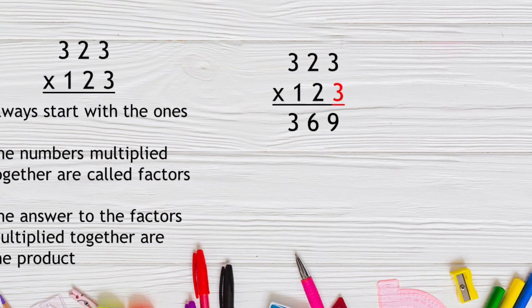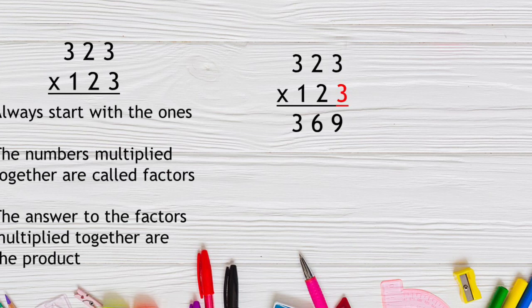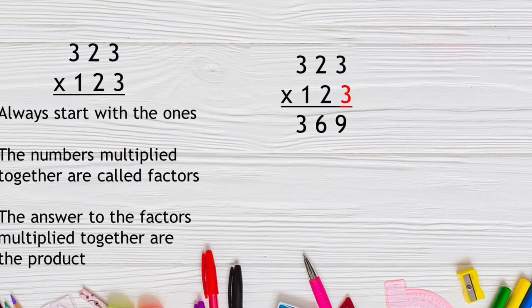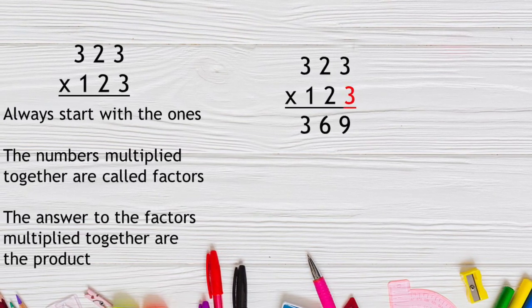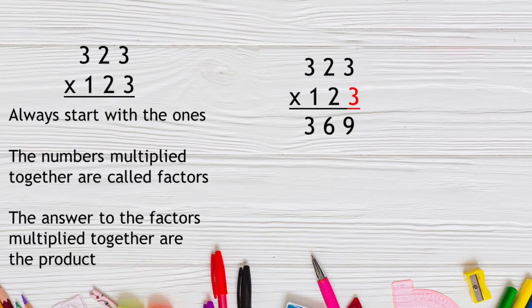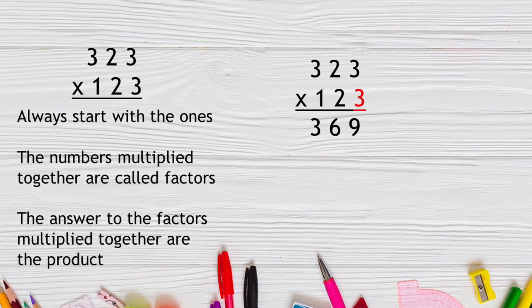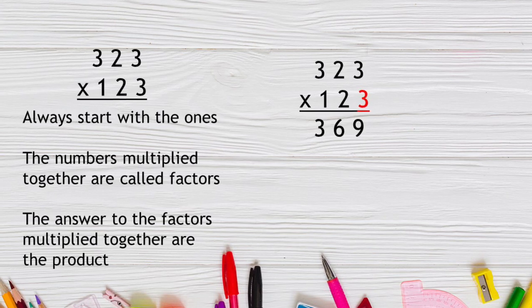The numbers that are multiplied together are called factors. The top number in this problem, 323, is called the multiplicand. The 123 is the multiplier. The answer to a multiplication problem is called the product.